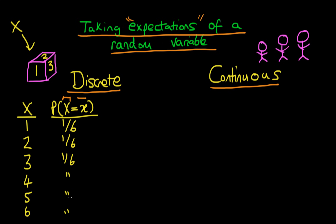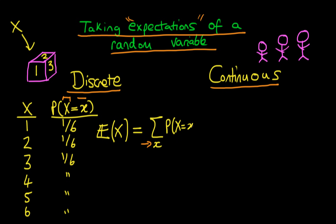So that defines our problem — how do we then go about finding the expectation of our random variable, and what do we actually mean by taking the expectation? In the discrete case, the expectation of X is equal to the sum over all particular values which our random variable can take on. The sum is the probability that big X equals little x, multiplied by that particular value x.